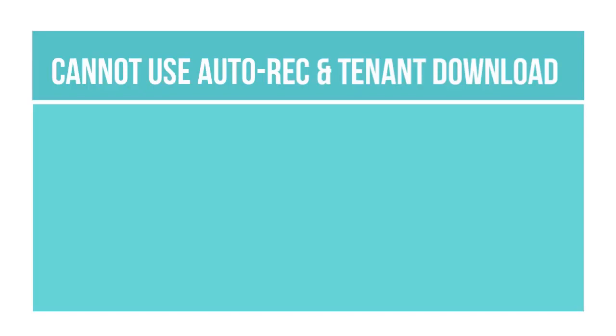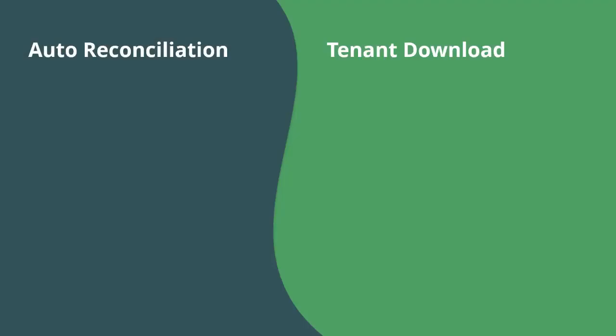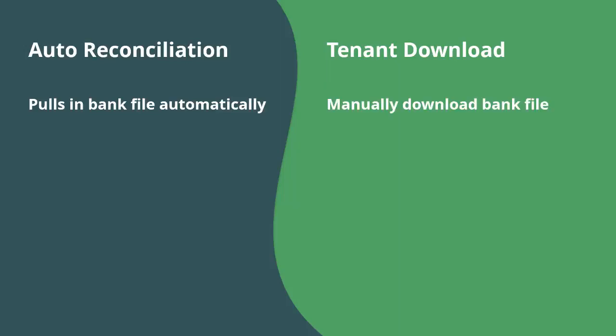For those of you using the auto reconciliation feature, please be aware that you cannot use both auto rec and tenant download — you have a decision to make as to which is the best feature for your office. The auto reconciliation feature pulls a bank file into Property Tree every morning, but depending on where you live and whether or not it's daylight savings, the bank feed might not come through until later in the morning, and is also affected by public holidays.